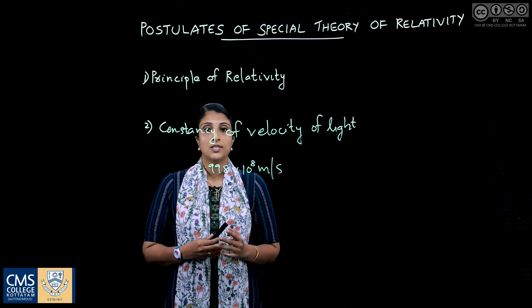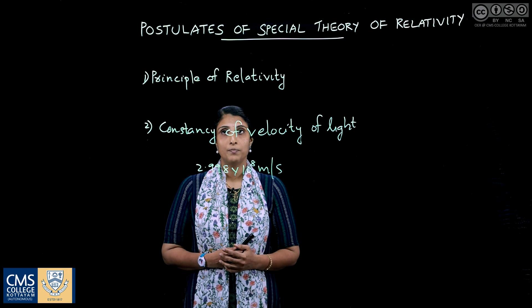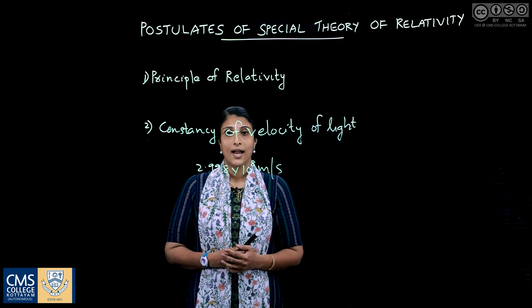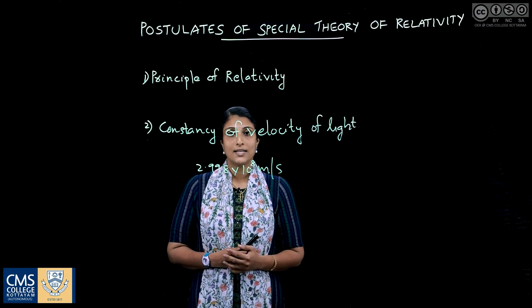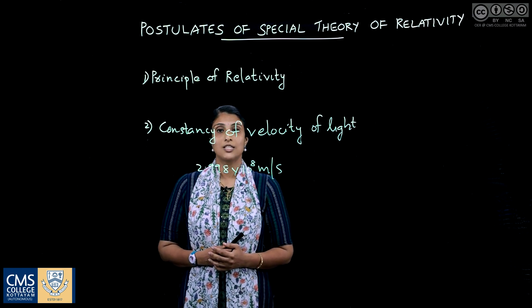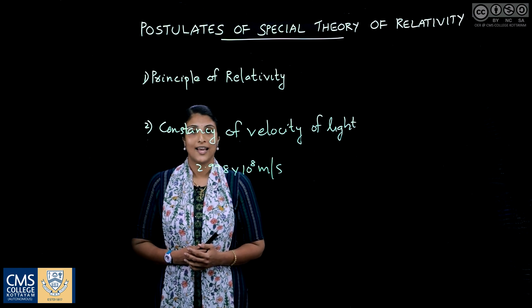The two postulates of the special theory of relativity are: the principle of relativity, and the constancy of velocity of light. Thank you.